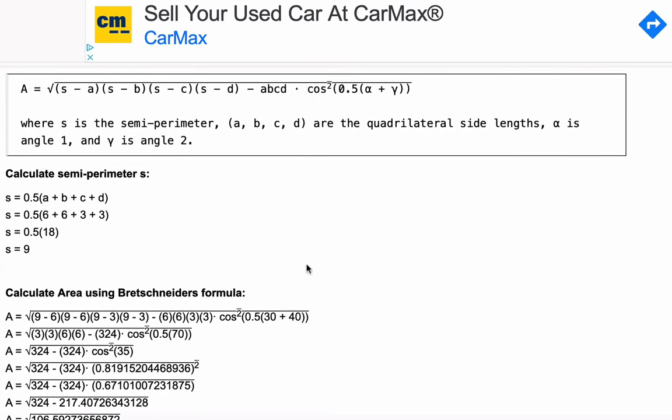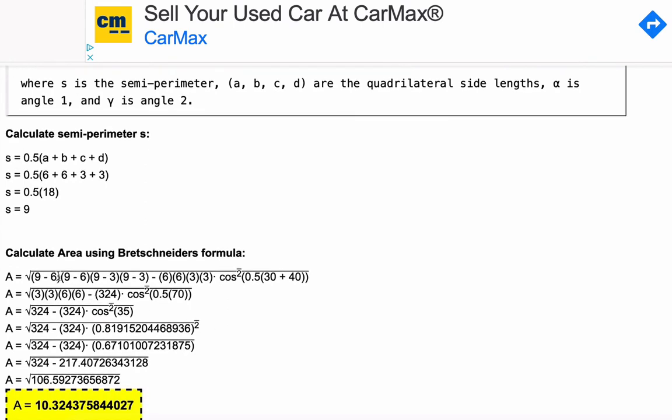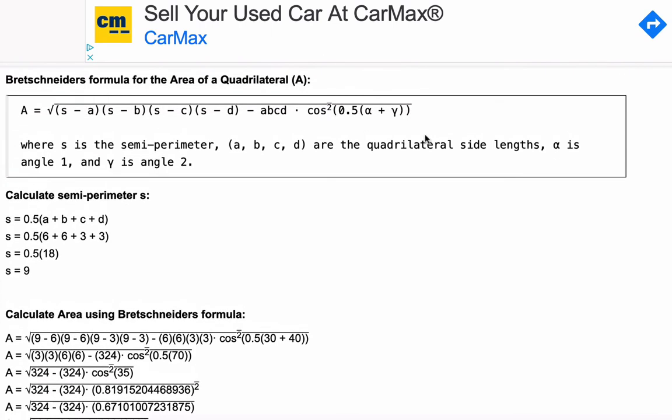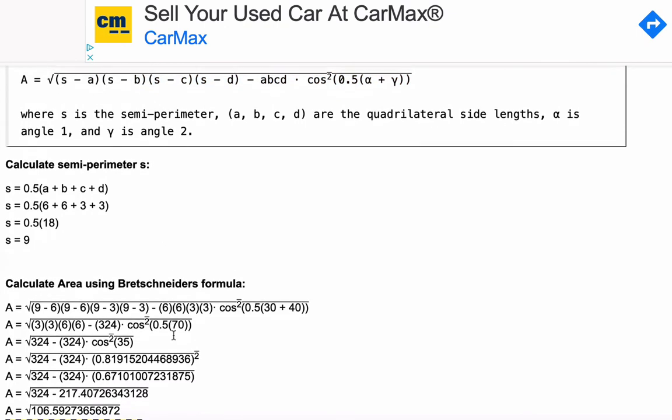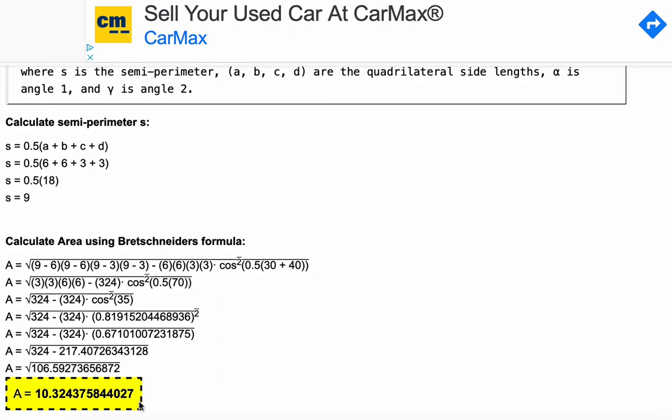And once we have S, the other variables in this formula you already entered above, so the six pieces. You plug in your four sides, your two angles, and your semi-perimeter into this formula. And then down here, we'll evaluate, simplify, and you will get your area of the quadrilateral.